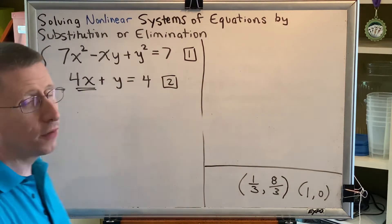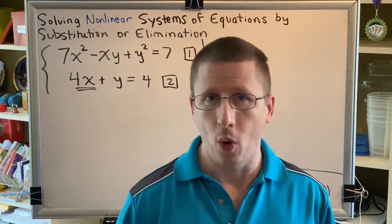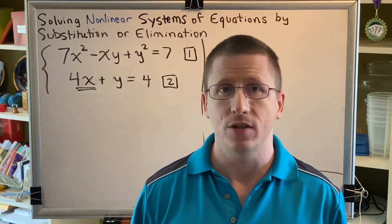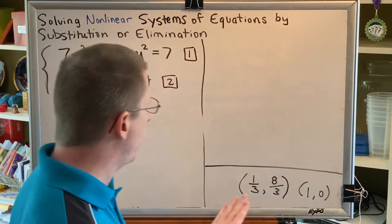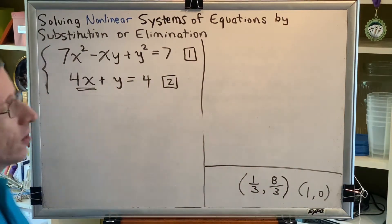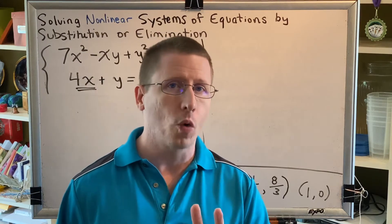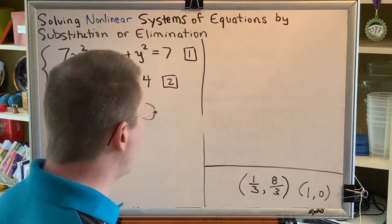The way this works is you have to plug in each point, one at a time, into both equations in your system. And because we have two points and two equations, this means that we have a total of four, two times two equals four check actions that we must take.